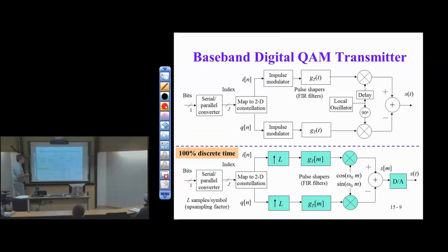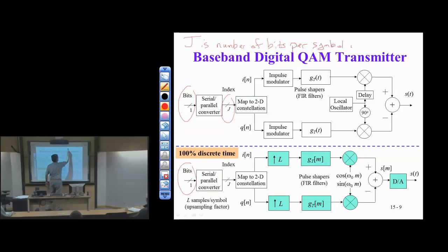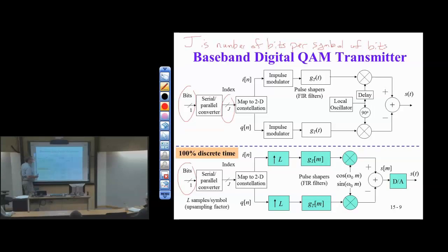As we've seen even with PAM, we have a stream of bits coming in, grouped into a block of J bits, where J is the number of bits per symbol. For 4QAM, that's two bits — J equals two. I take those J bits as an index into a lookup table. This map to a 2D constellation has the amplitudes of the constellation map, and those amplitudes now have two dimensions.